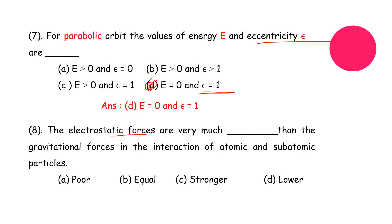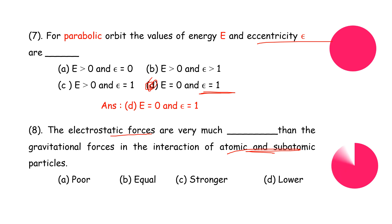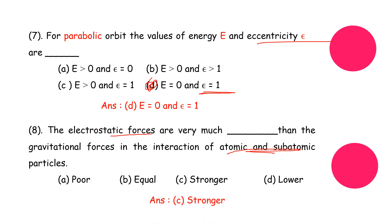The next question: electrostatic forces are very much — what — compared to gravitational force in the interaction of atomic and subatomic particles? The options are: lower, equal, stronger, or weaker. The correct answer is option C: electrostatic forces are very much stronger than gravitational force in the interaction of atomic and subatomic particles.